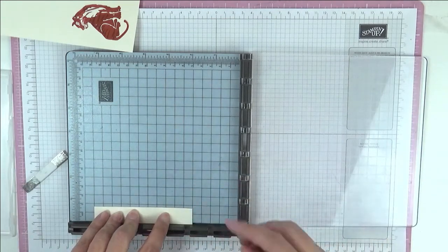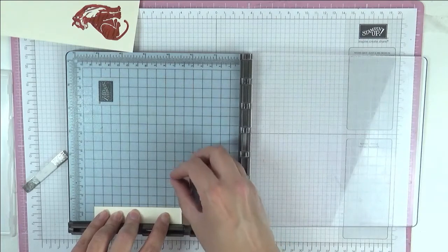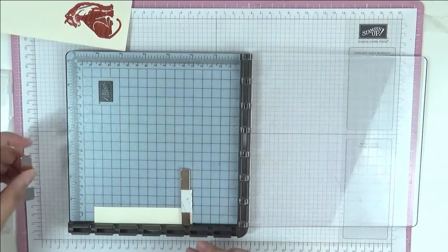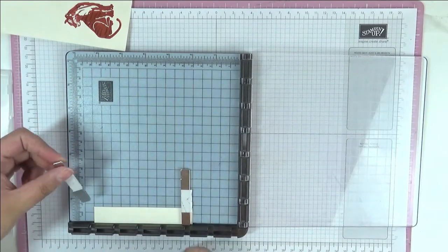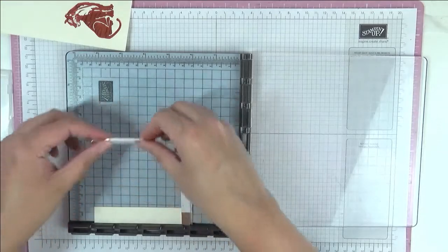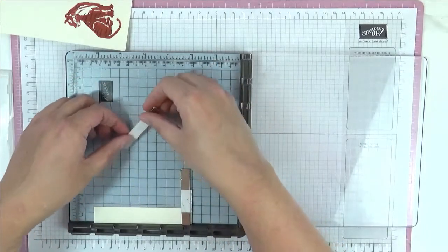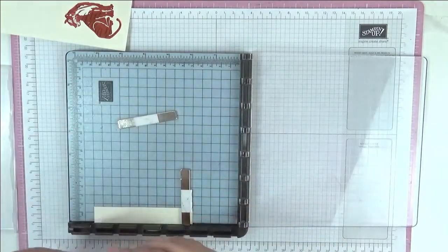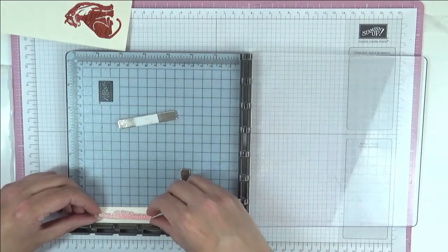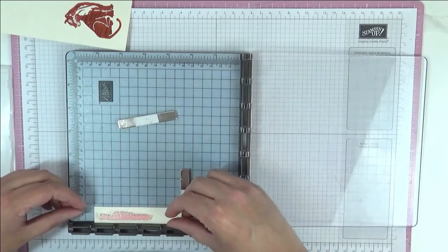I've got here a strip of one inch cardstock and this is Very Vanilla. I should have said we stamped on Very Vanilla as well. So I don't think we're going to need the second piece. And I'm going to use this sentiment that says 'have a wild birthday.' And now we're going to try and line it up straight and hope for the best.